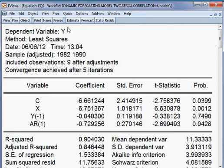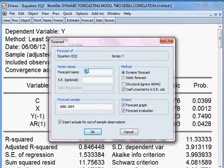I go to forecast. And the forecast name, I put it here as EQ2_YF. That means the dependent variable, which is Y, will be forecasted. The dependent variable, which is Y, shall be forecasted.